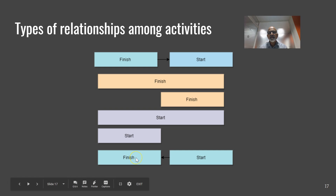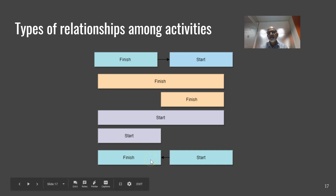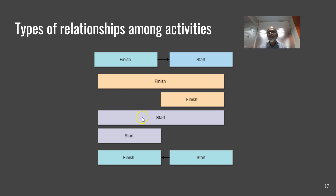The last relationship is Start to Finish, meaning something has to start for me to finish something else. An example: when the main power supply comes in, I can stop the generator. For most activities, Finish to Start is the most common dependency, followed by Finish to Finish and Start to Start. Between two activities there can be any one of these relationships.